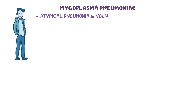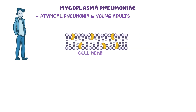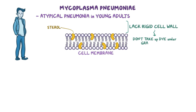Mycoplasma pneumoniae is a small bacterium which causes atypical pneumonia in young adults. Mycoplasma, as a genus, have a cell membrane that's packed with sterols, but they lack a proper rigid cell wall. Therefore they don't take up dye under gram staining, so they cannot be visualized with light microscopy.